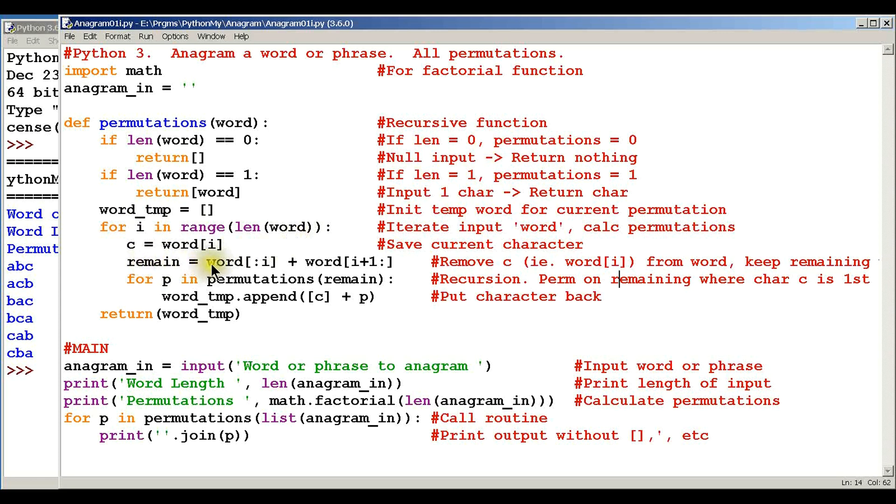Here we're going to grab the current character, which is this i-th part of the word. Then here we're going to take away the place where we are, whatever character we're on, and we're going to remove that from the word, and then we're going to keep the remaining pieces of it.